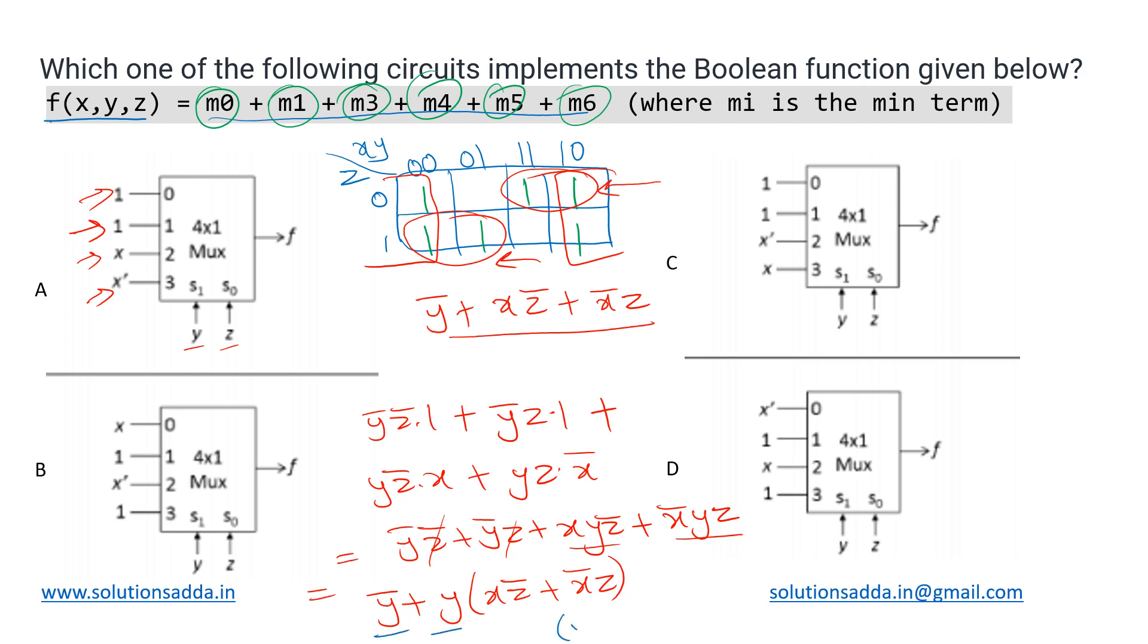So after applying the property it will actually become (ȳ + y)(ȳ + xz̅ + x̅z). Now this ȳ + y will again give us one, so what we are left with is ȳ + xz̅ + x̅z. And this is what we wanted as the output.